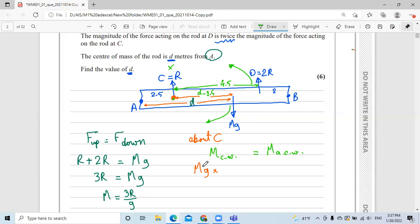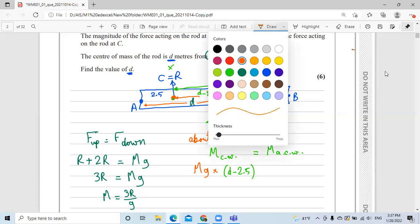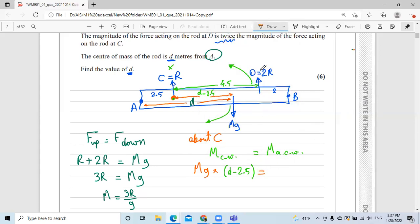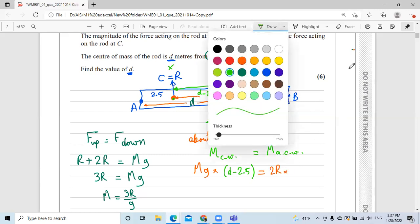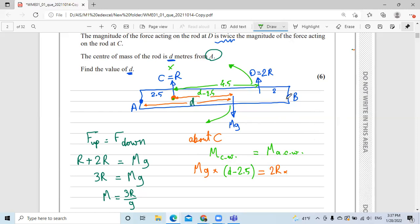So what we'll say: Mg multiplied by the distance, which is D minus 2.5, this is the moment clockwise, equals the moment anticlockwise, which is the value of D, which is 2R, multiplied by how far it is from point C. And again, the whole length is 9 meters minus 2 minus 2.5 to know how far is D from C, which is 4.5 meters. This is one way to answer the question.